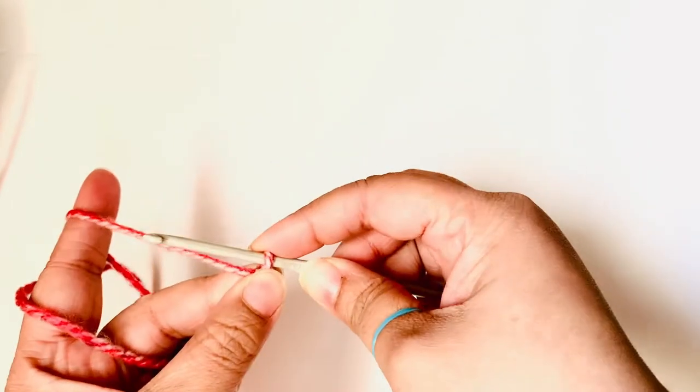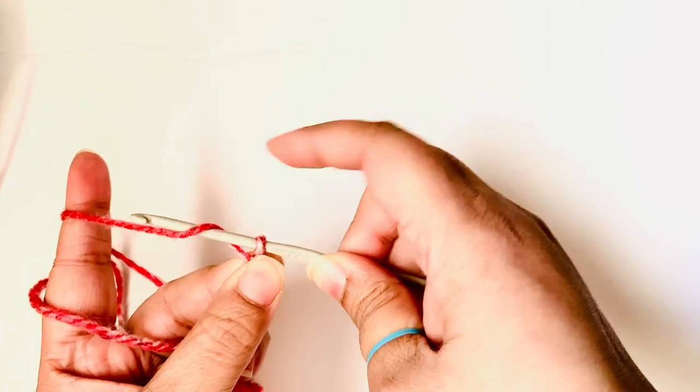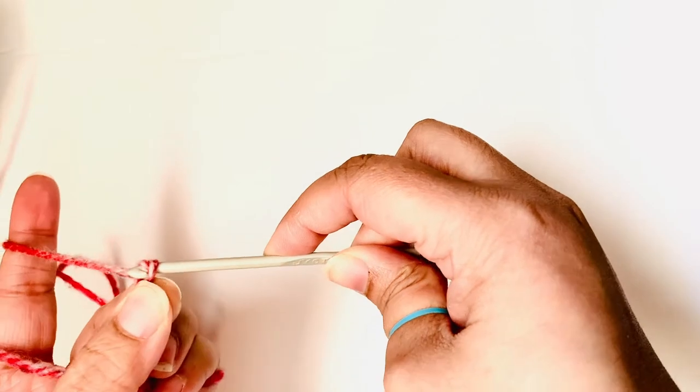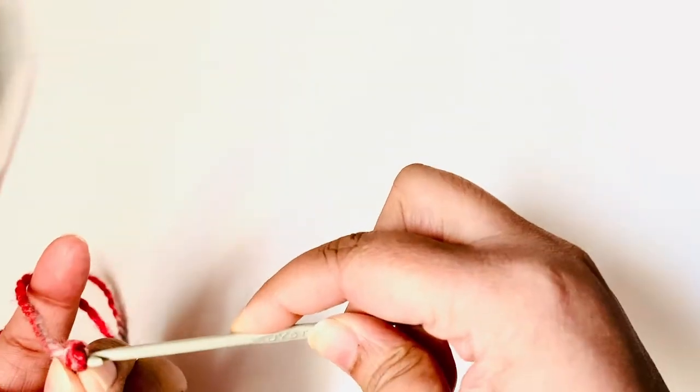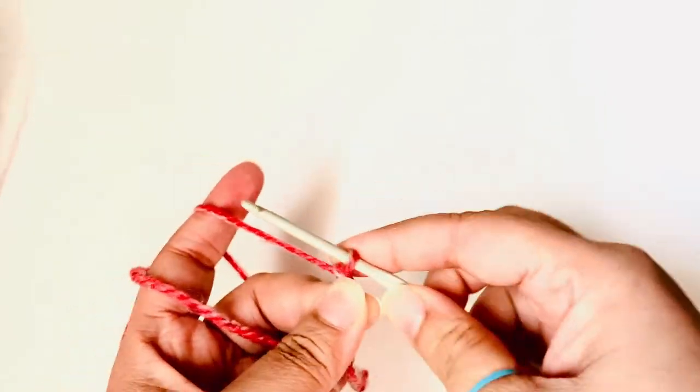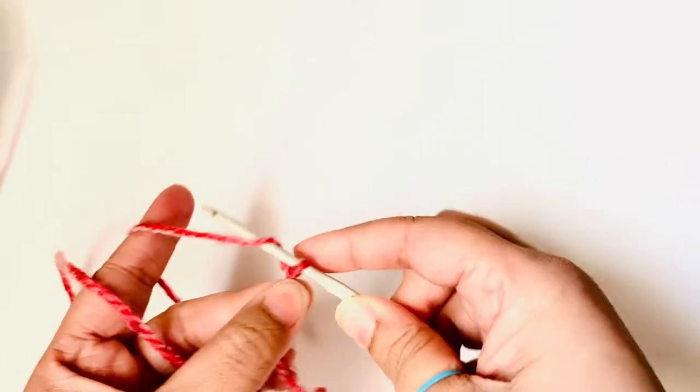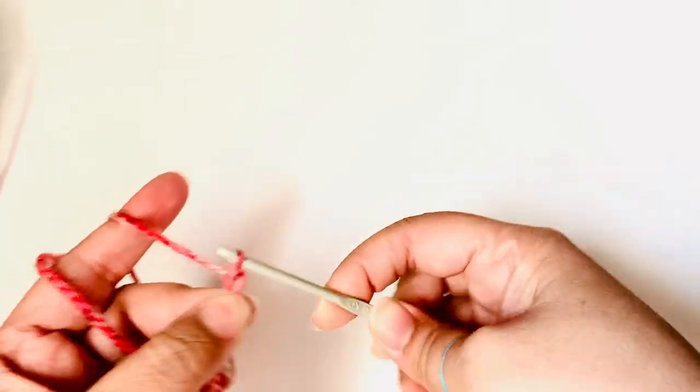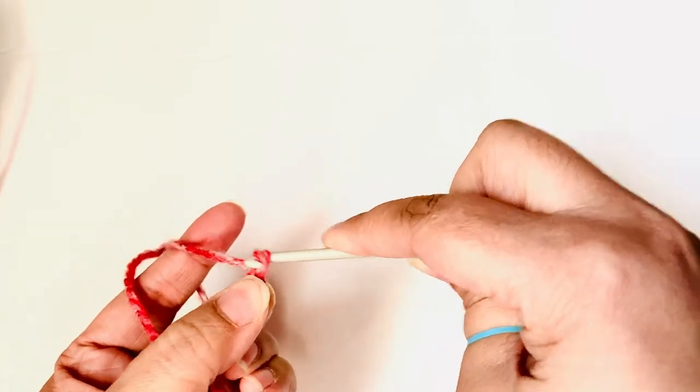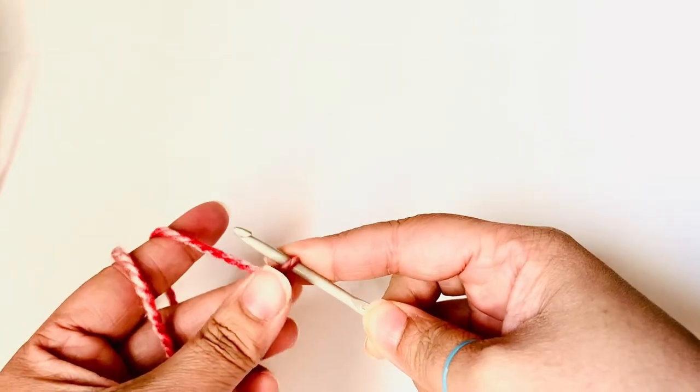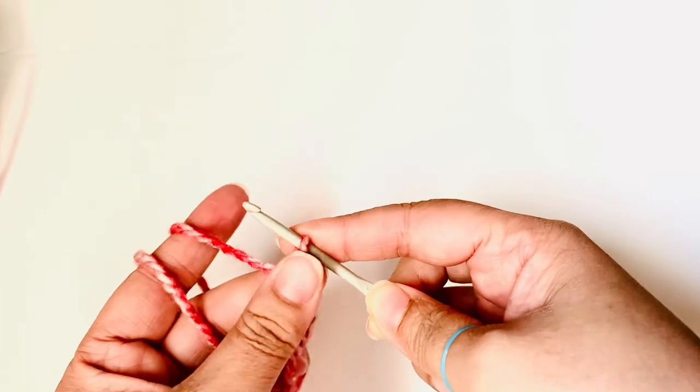So I'm holding my hook like this, my tail in my hand, and holding the neck of the slip knot. I roll my yarn over the hook and then I fish it through the existing loop on the hook. And I have to make sure that I grab all the strands of the yarn and I don't leave any.